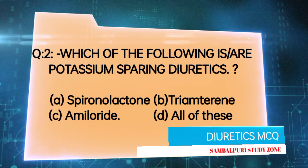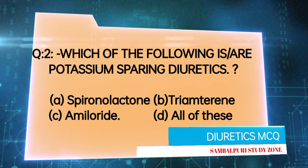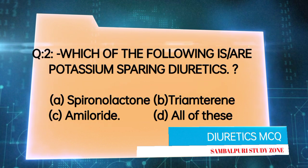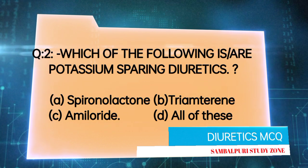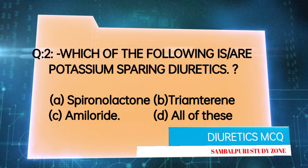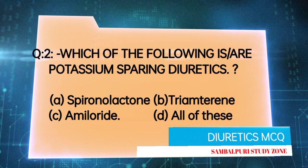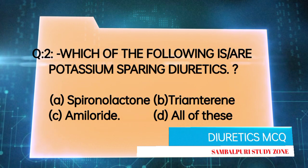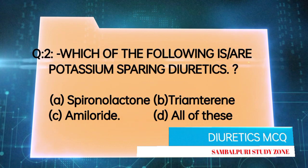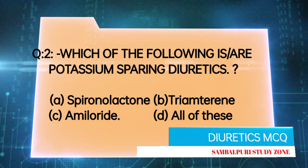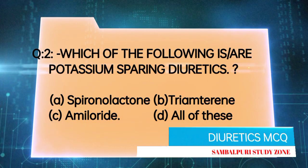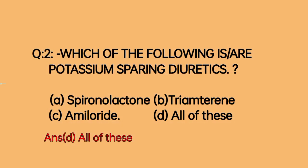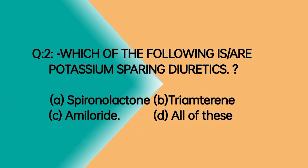Which of the following is/are potassium-sparing diuretics? Options: spironolactone, triamterene, amiloride, all of these. The right answer is all of these.